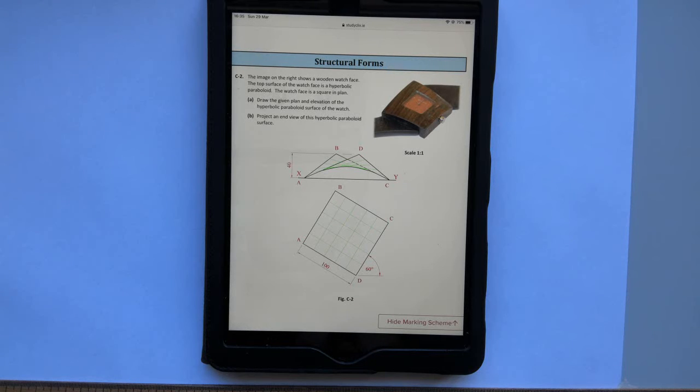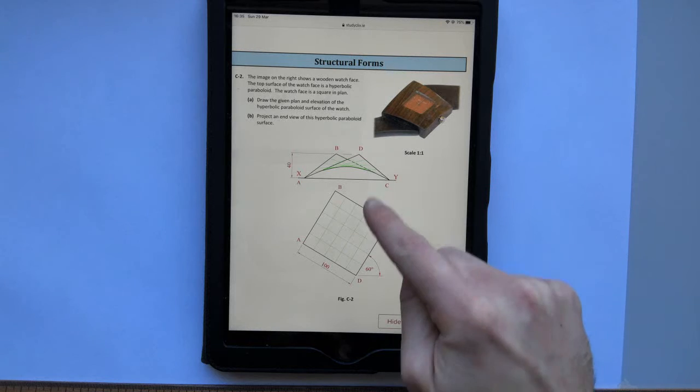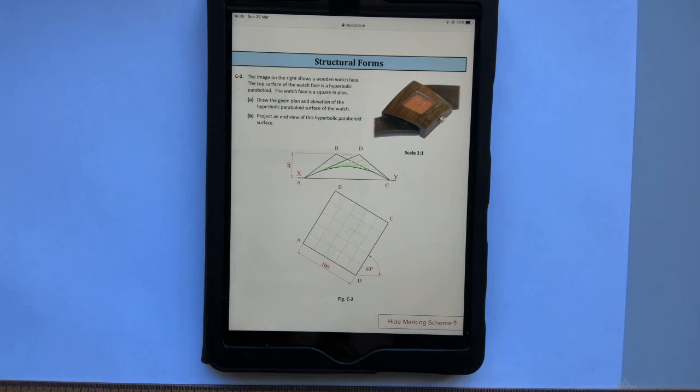Part A is draw the given plan and elevation of the hyperbolic paraboloid surface of the watch, so basically these two views here. And then part C, predict an end view of this hyperbolic paraboloid surface, so basically what we see when we look in this direction here.